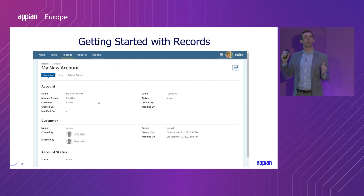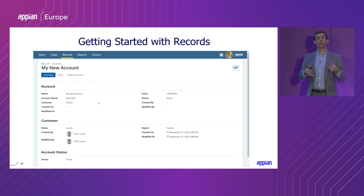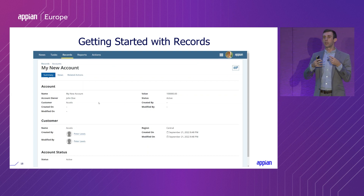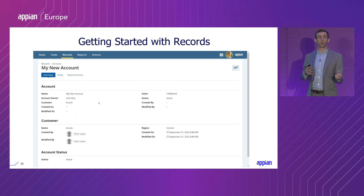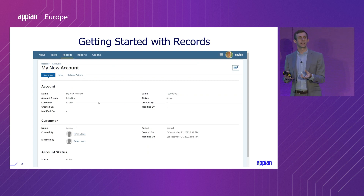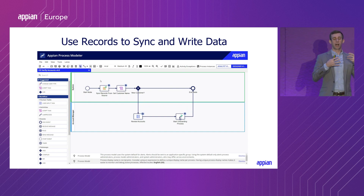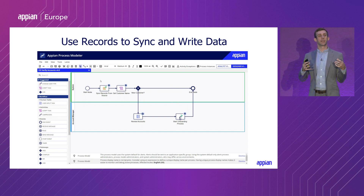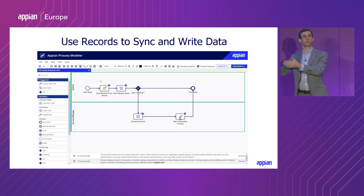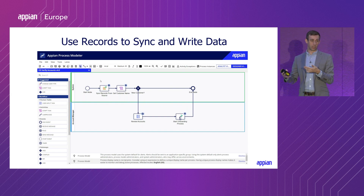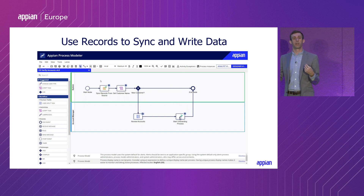We've looked at how to create the record type and add some basic information. But one of the other important parts about using records in Appian is that you can actually use them for other parts of your application. By defining the data structure, we can use the information about that structure — like what fields and relationships we have — in order to do things like update the data. I'd like to show you the ability to use this record information in a process. For this process, I'm going to include a couple of different things. First, I'd like to include an item that enables me to sync the data — so if there are changes that occur in an external system, maybe my customer was updated, I can sync that information into Appian.